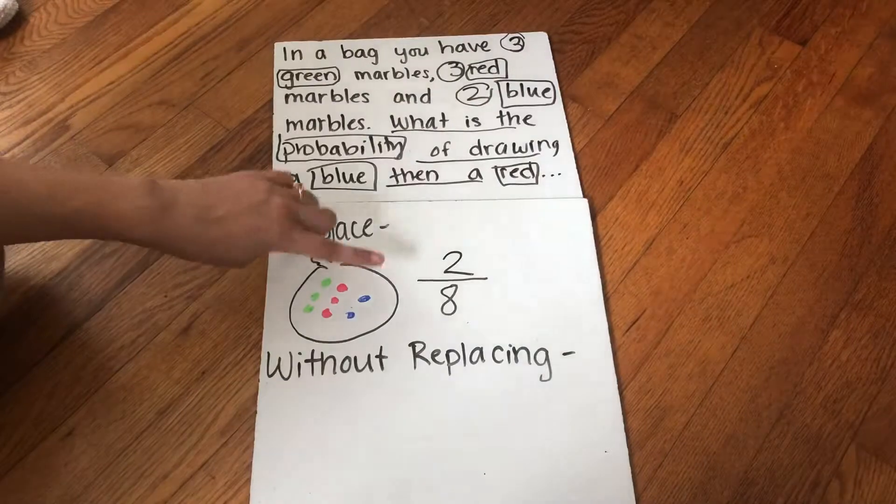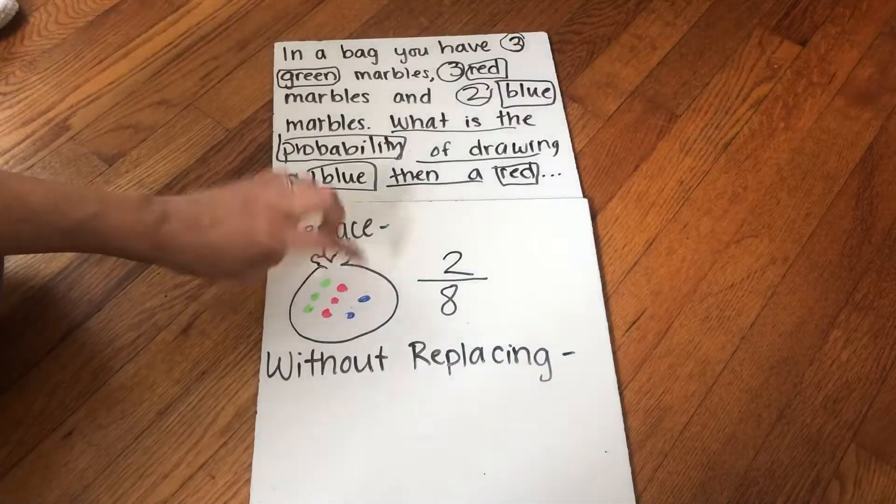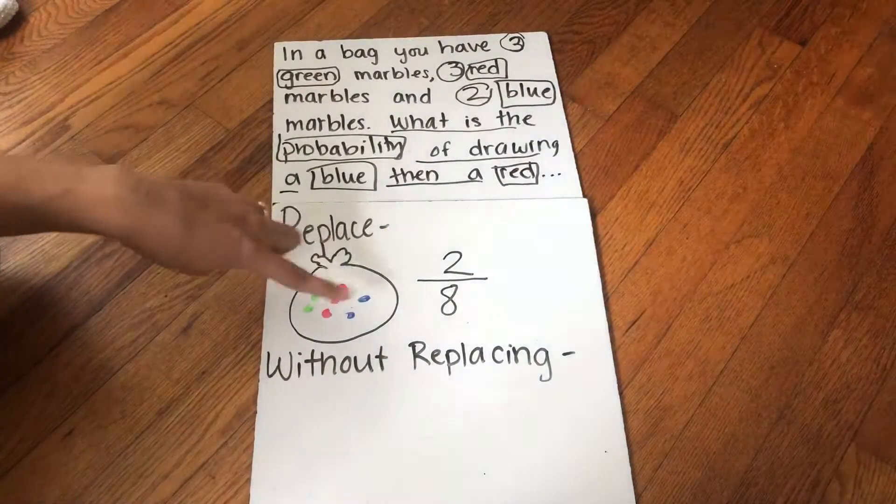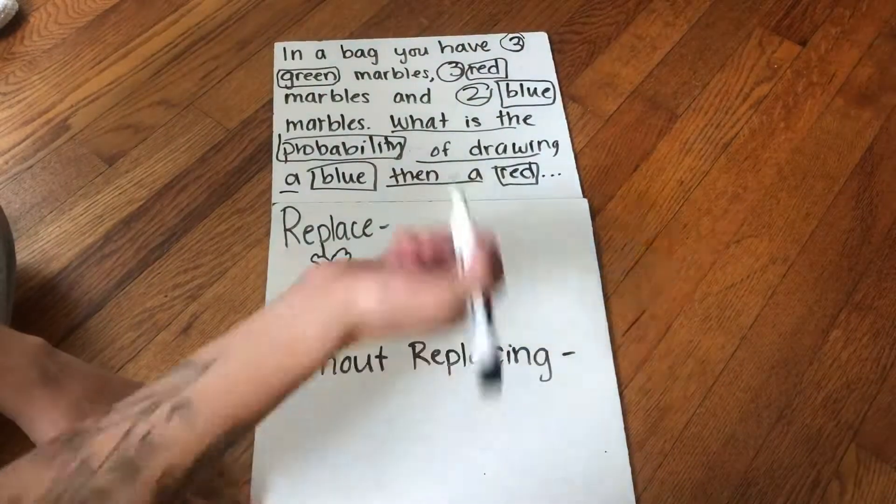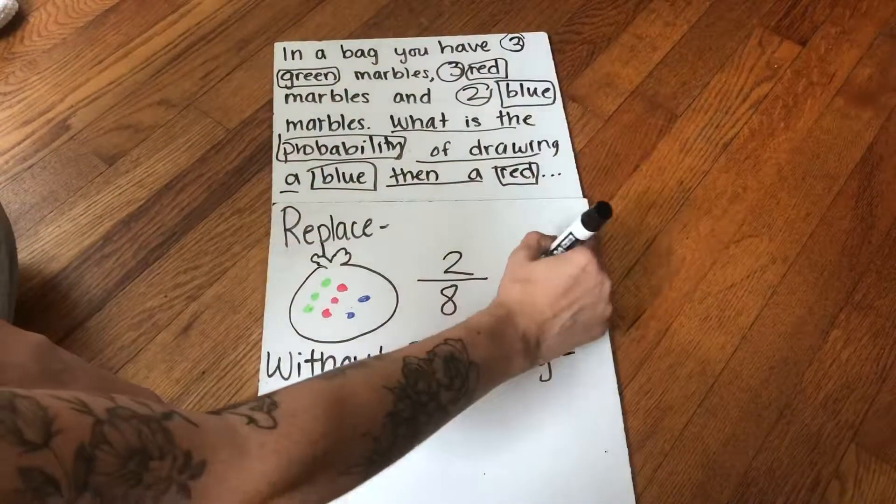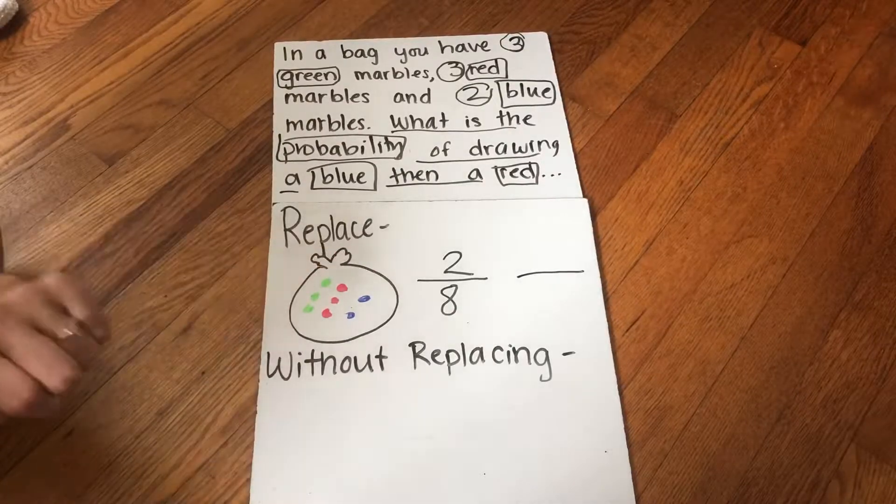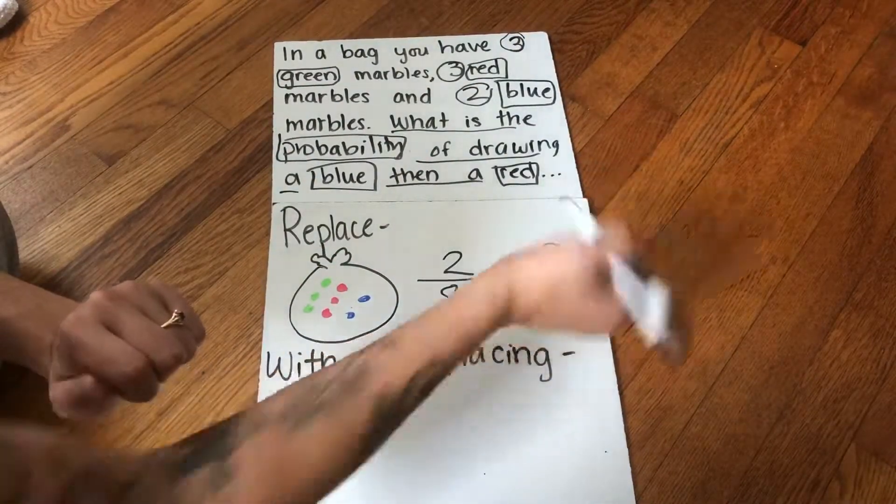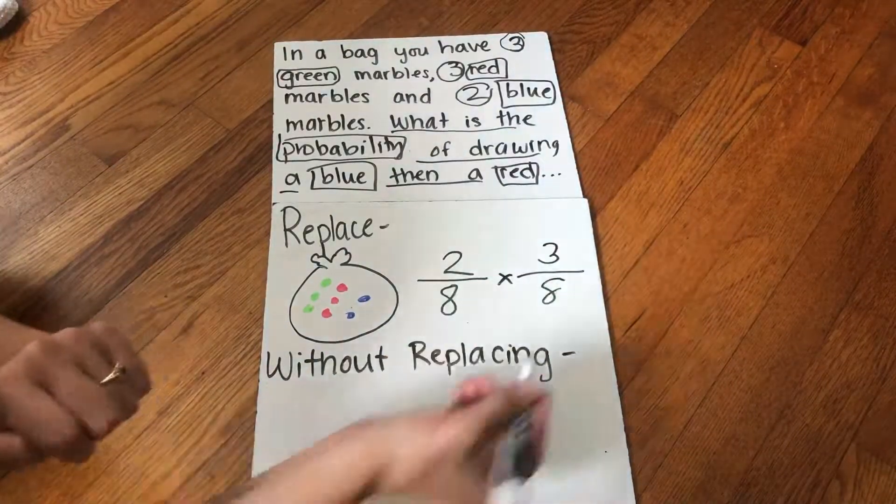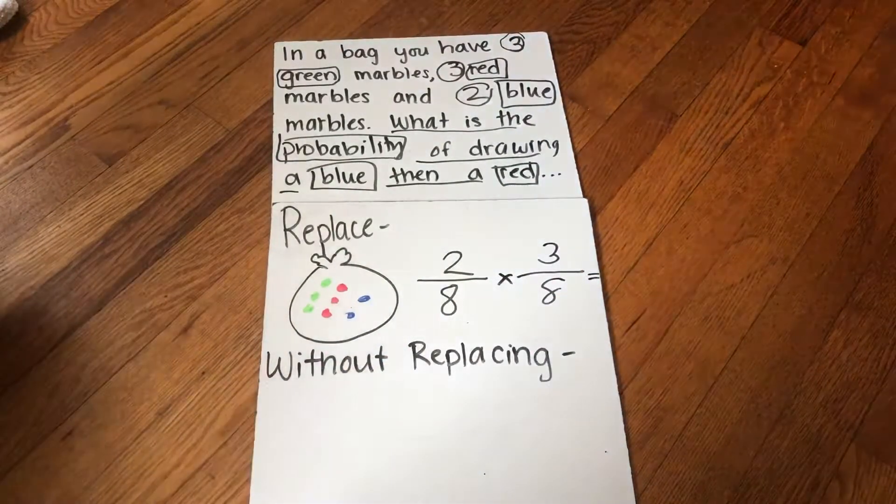And if I replaced it, I'm putting that blue marble back in the bag. So I still have eight in there. So when I go to do my next one, red, I have three still out of eight because I put that blue marble back. So I have three out of eight and I would multiply those together to find the final answer.